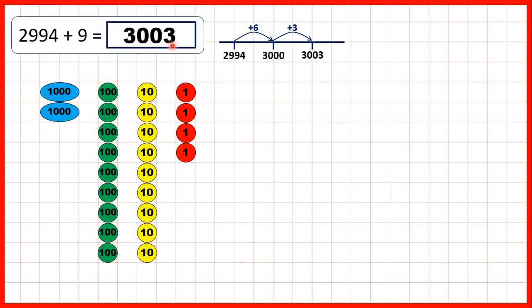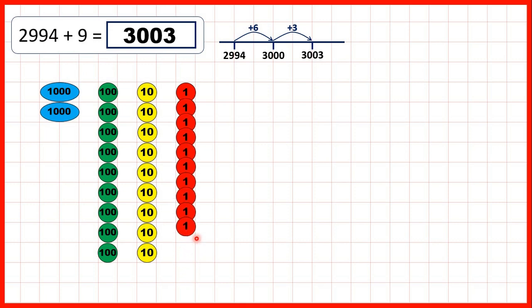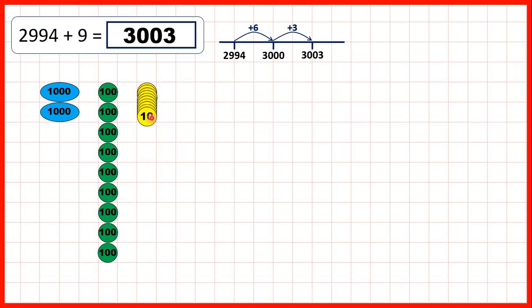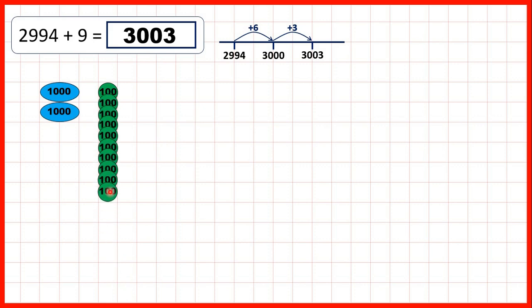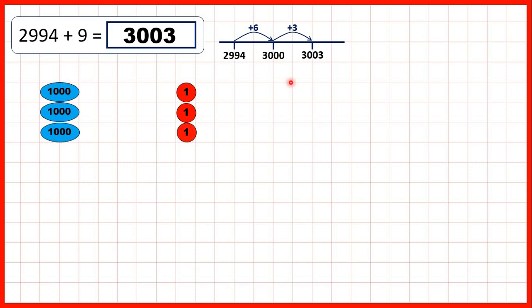Or, using place value counters, we start with 2,994. We can add 1, 2, 3, 4, 5, 6, exchange, exchange again. And because we've now got 10 hundreds, exchange again to make 1 extra 1,000. So we've added 6 to make 3,000, and if we just add 3 more ones, that gives us 3,003.